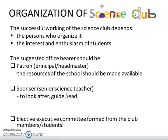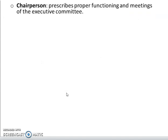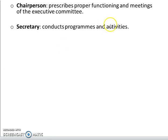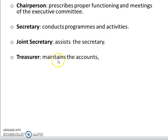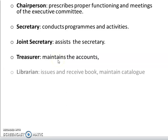The third one is elected executive committee from the club members or students which includes a chairperson who presides over proper functioning in meetings of the executive committee. Then is a secretary who conducts programs and activities. Joint secretary who assists the secretary. Treasurer who maintains the accounts. Librarian who issues and receives books and maintains the catalog.